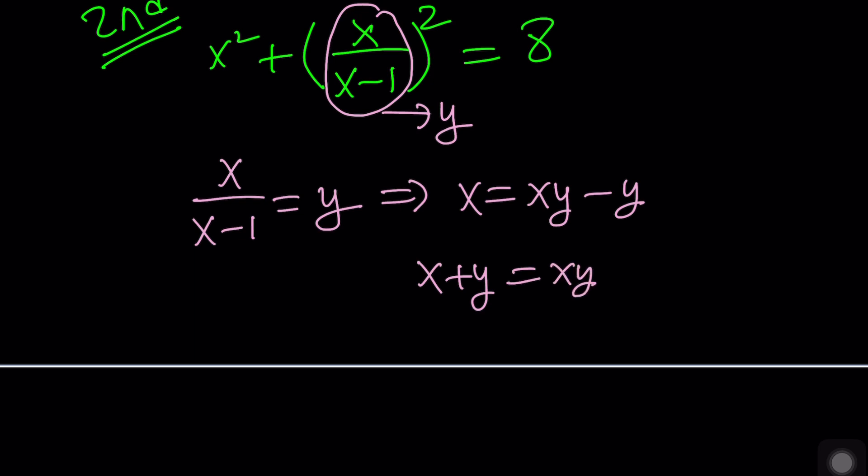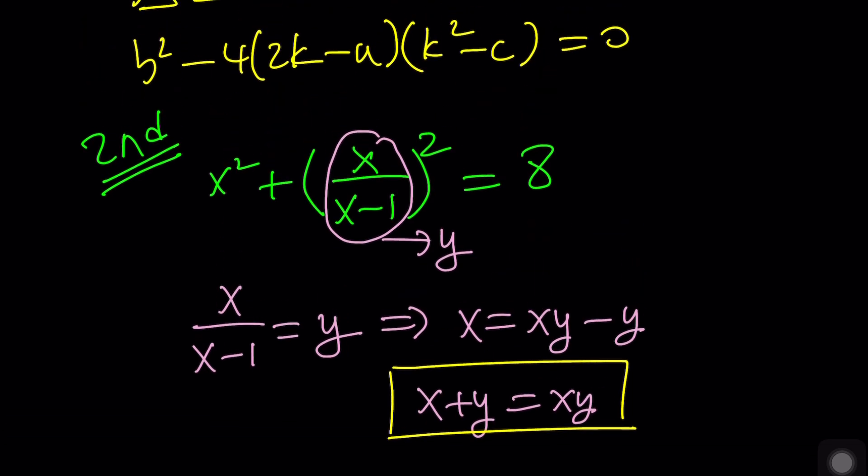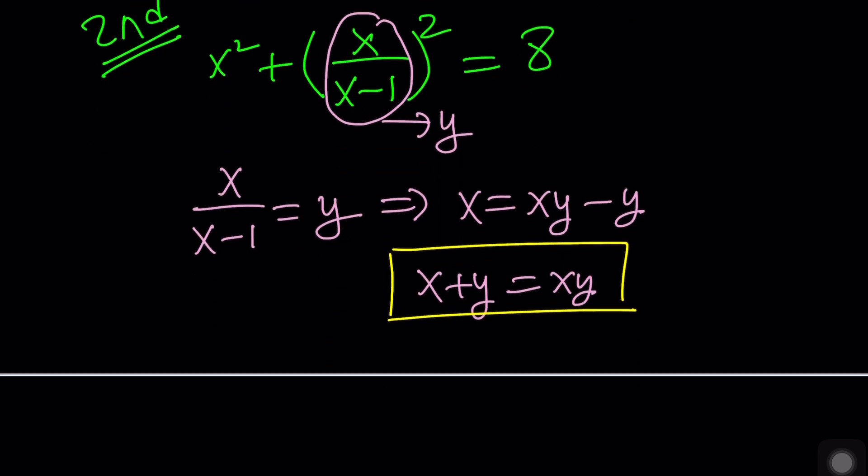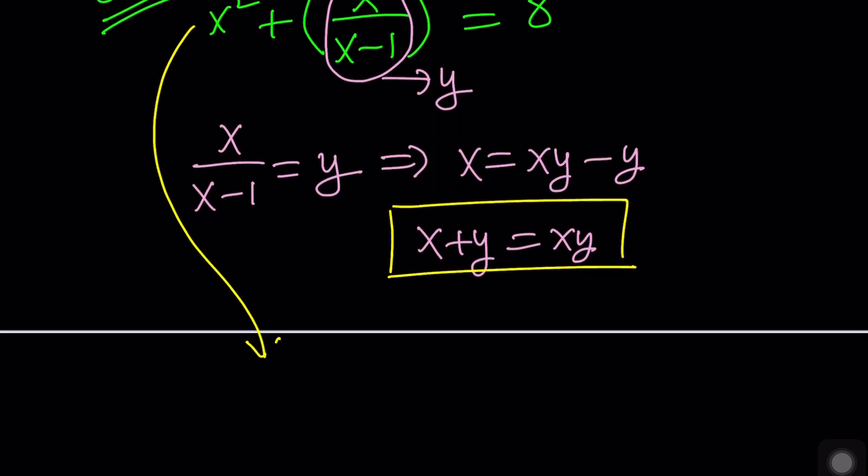Now, we do need another equation. That comes from substituting Y for X over X minus 1. If you just think about it, this should give you X squared plus Y squared equals 8. Nice.